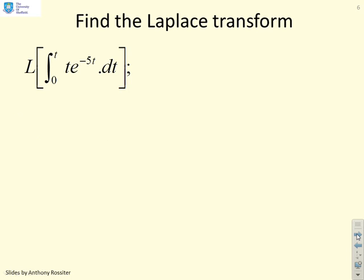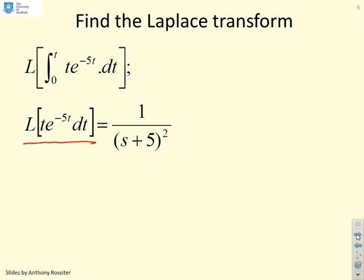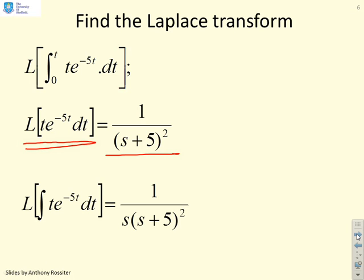A question then, just to reinforce this. Find the Laplace transform of the following integral: the integral between 0 and t of t*e^(-5t) dt. And you might think, golly, to find the Laplace transform of that looks a bit of a mess. However, I know from the first three videos that the Laplace of t*e^(-5t) is given as 1 over (s+5)^2. And I also know that if I want the Laplace of an integral, I just multiply by 1 over s. And so you will see, I just put the result down by inspection: 1 over s times (s+5)^2.